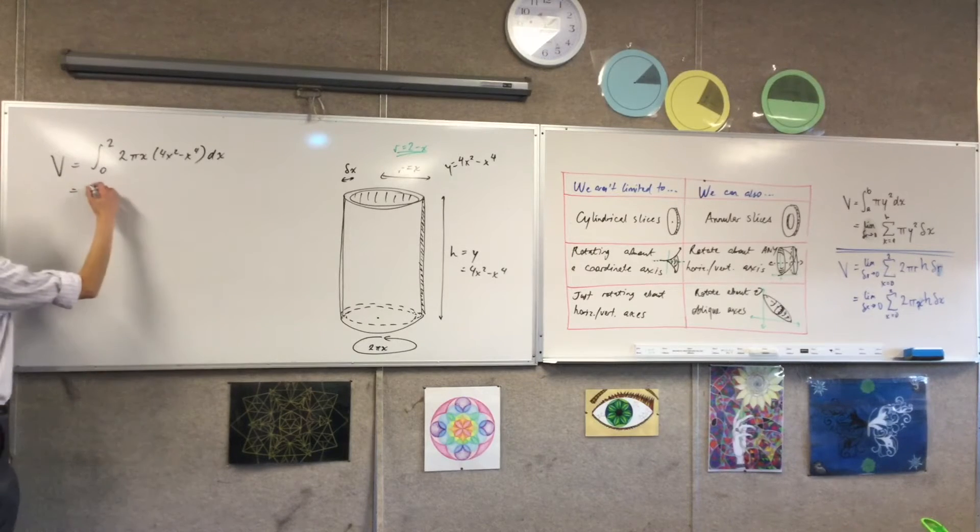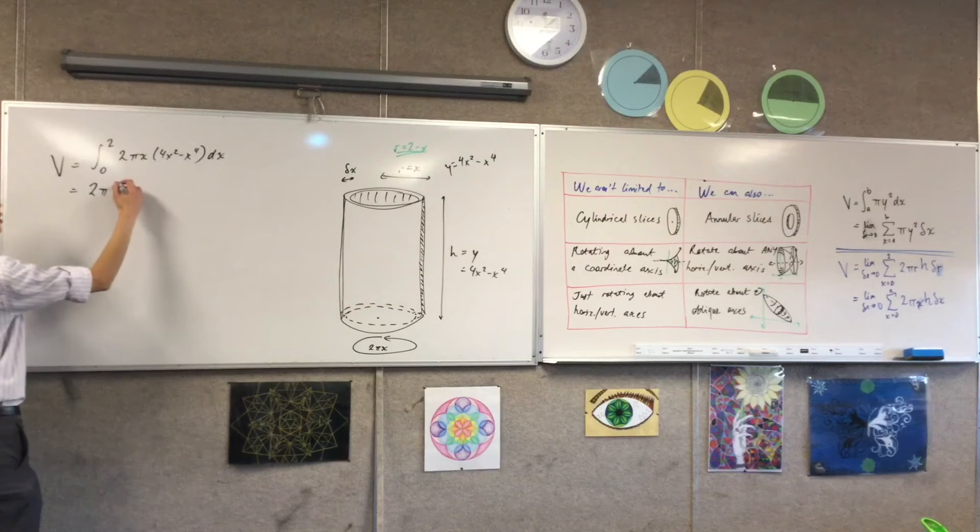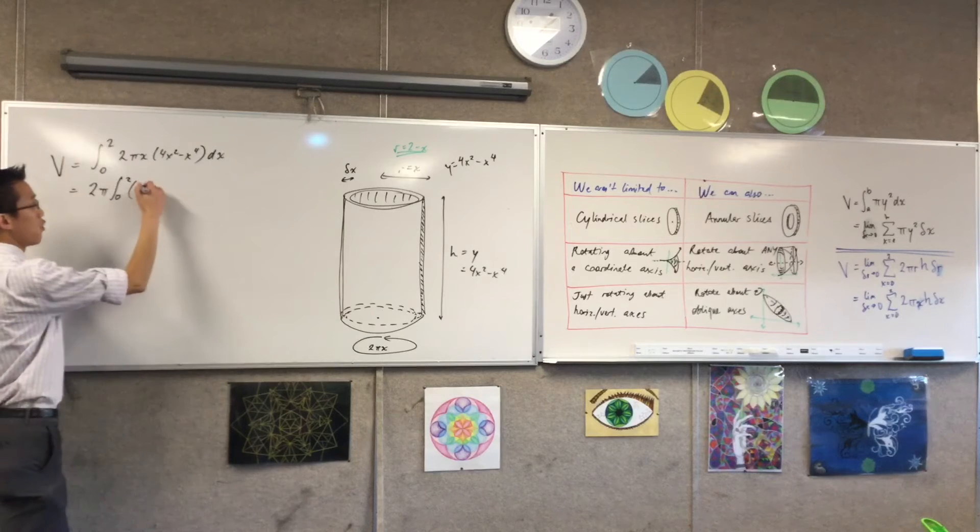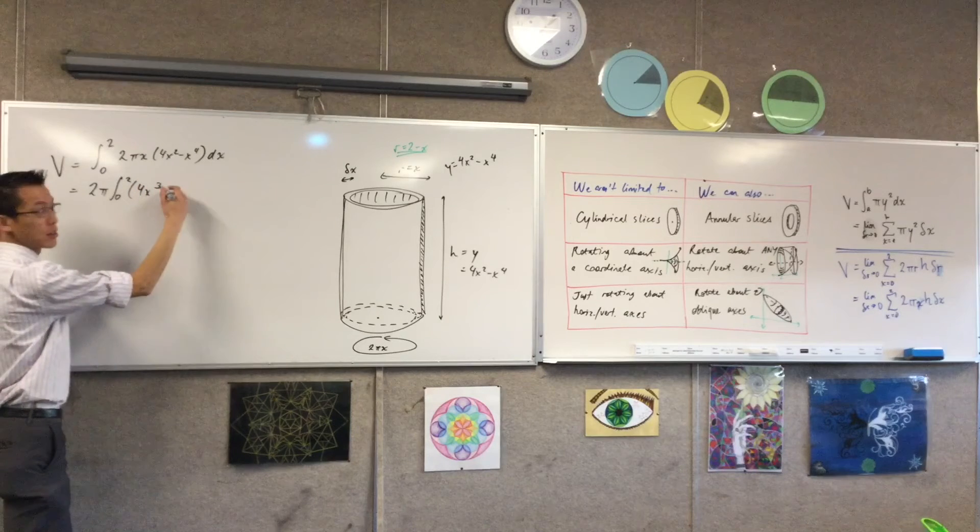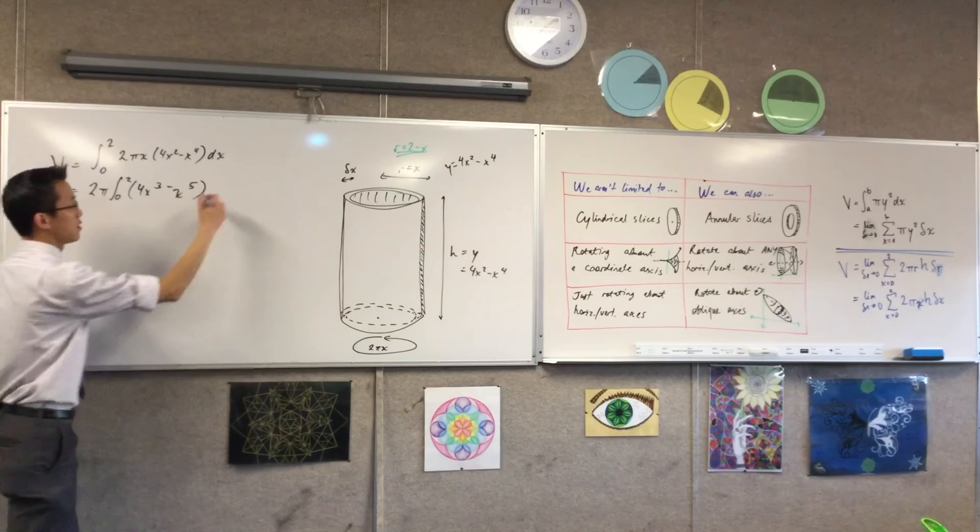It looks like I can take out a factor of 2π. That's nice. Then I've got the integral and what's my integrand? 4x cubed minus x to the 5, dx.